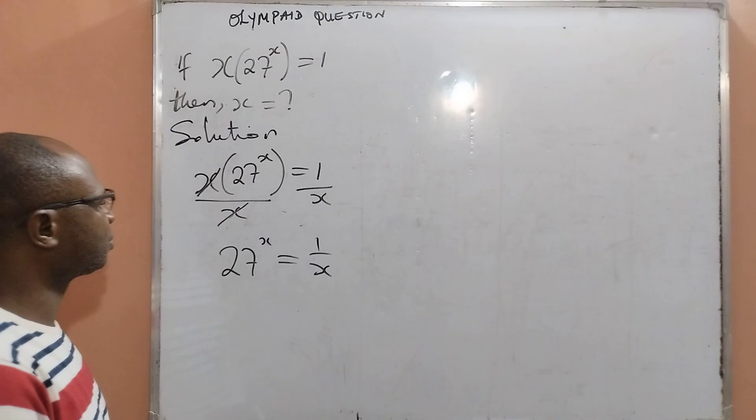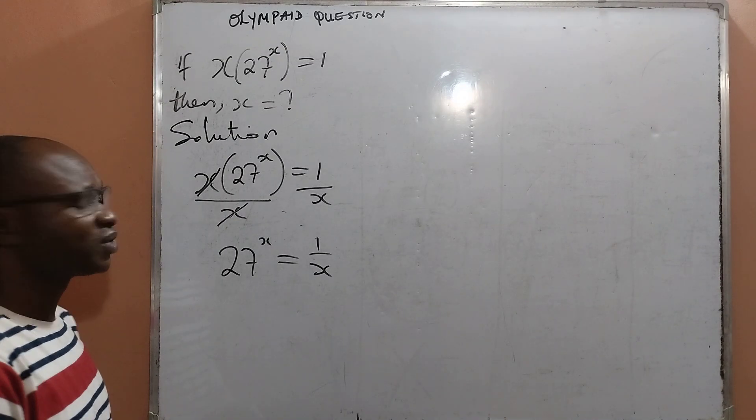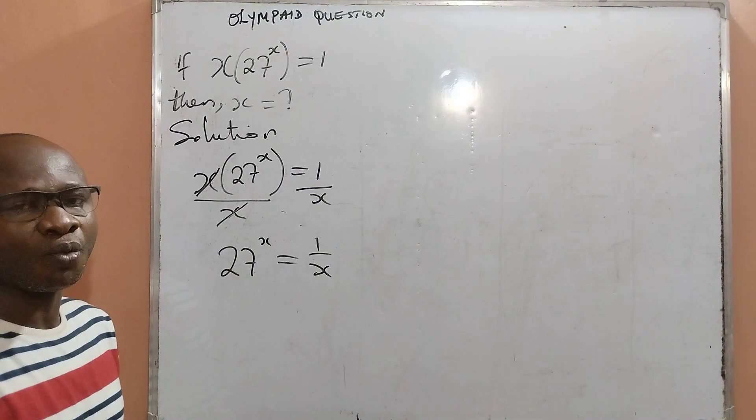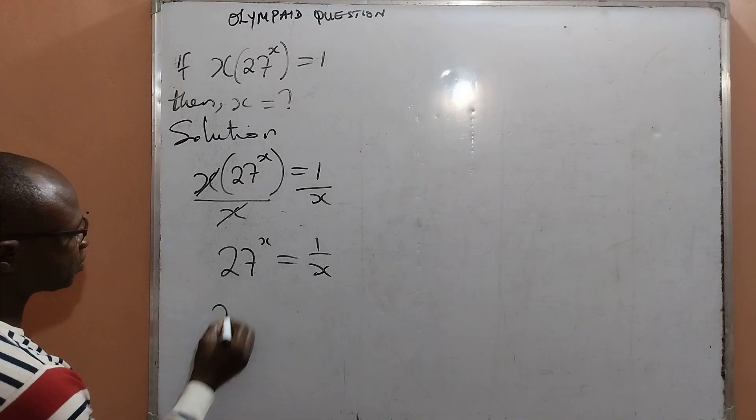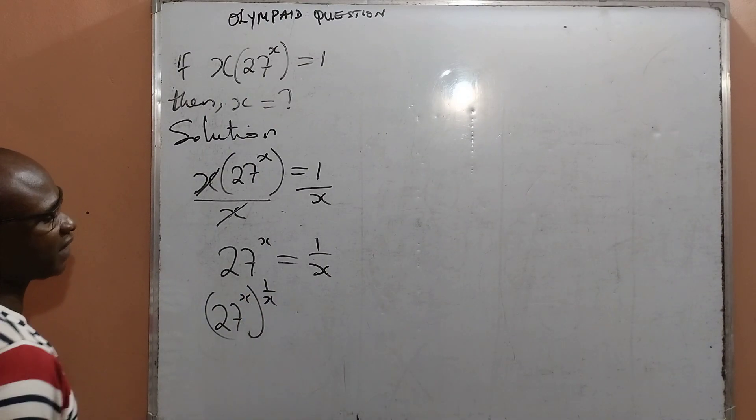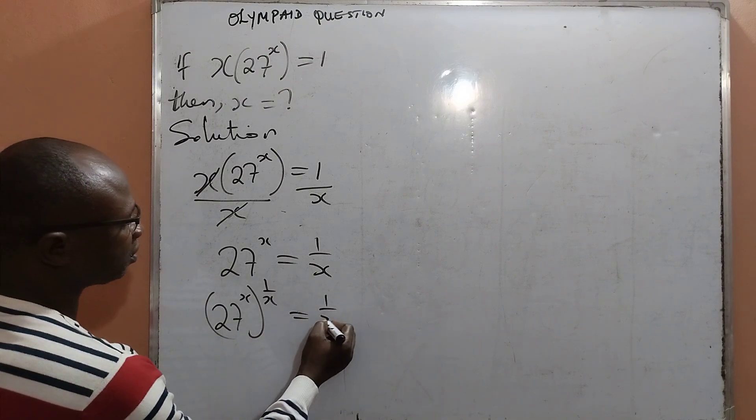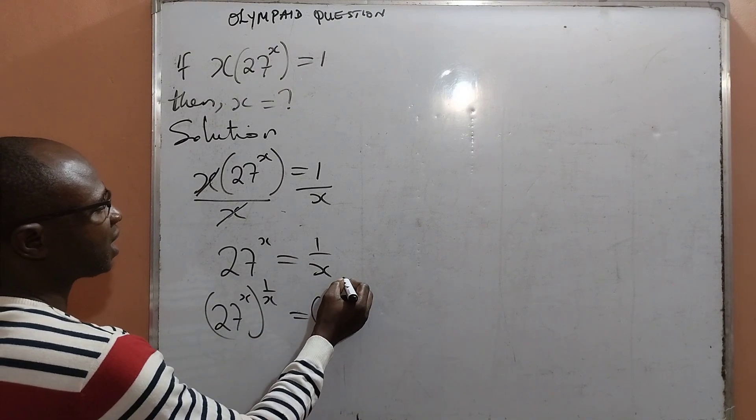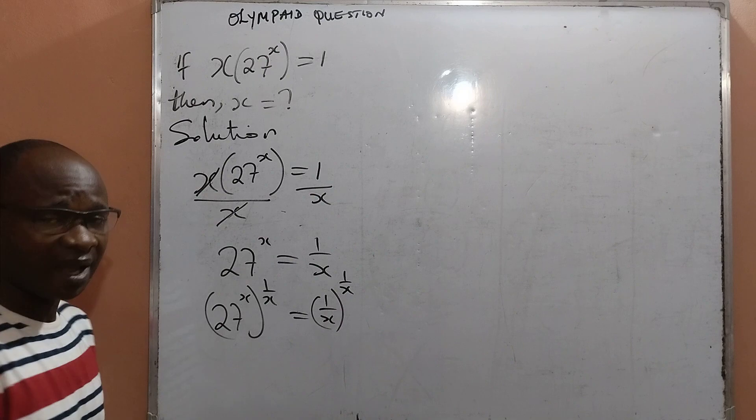At this point, the next thing I will do is to power both sides of the equation by 1 all over x, and that becomes 27 raised to the power x, now power to 1 all over x, equal to 1 all over x. I will state power to 1 all over x.